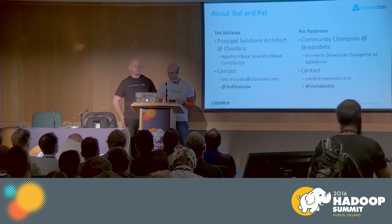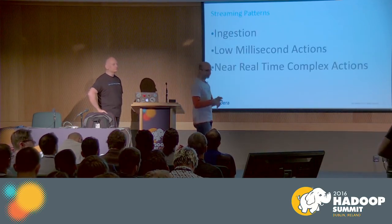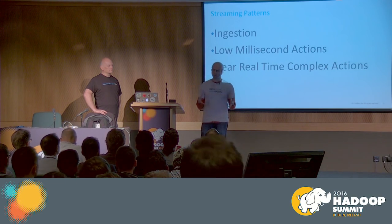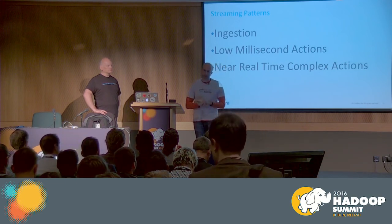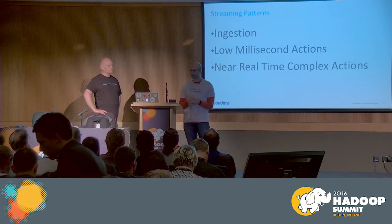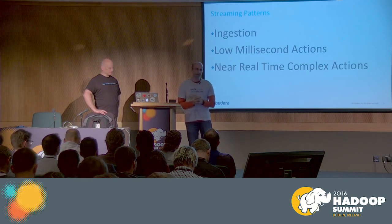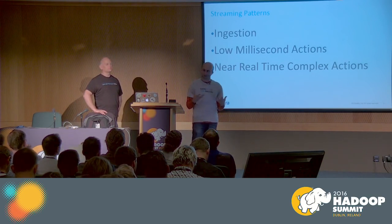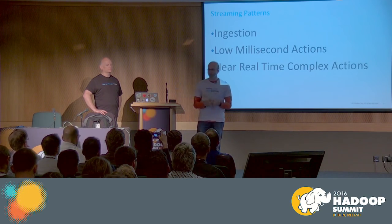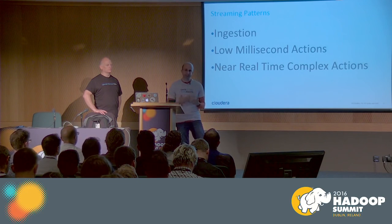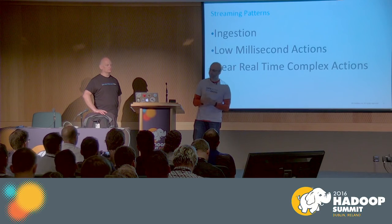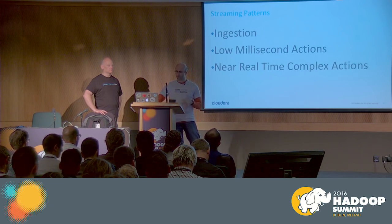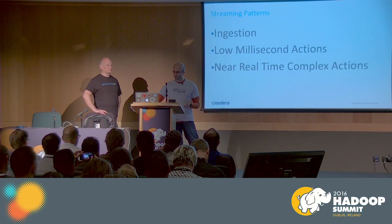We're going to be talking about streaming. For context, I wrote a blog called Streaming Patterns — just Google 'Cloudera blog Malaska Streaming Patterns.' It really comes down to three or four streaming patterns that matter: streaming for ingestion, streaming for low-latency actions like fraud detection and anomaly detection, and more complex things like counting, machine learning, and SQL. We'll touch on these without going heavy on each one.